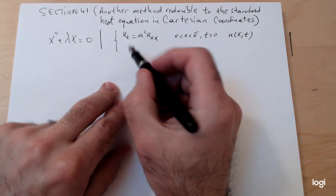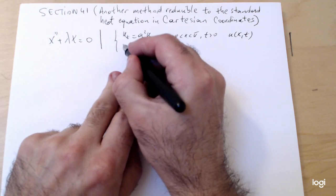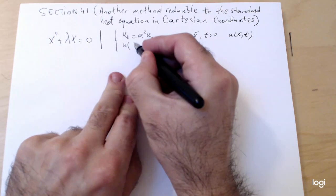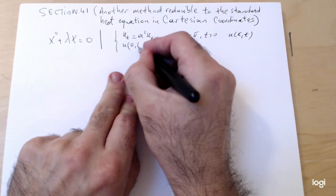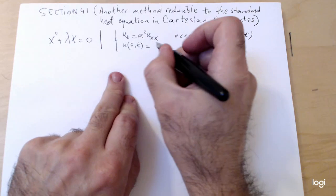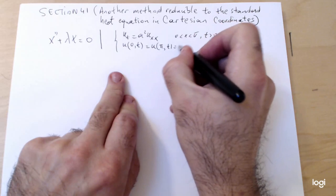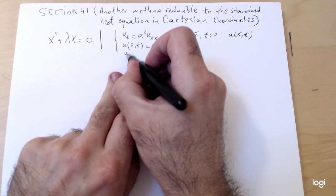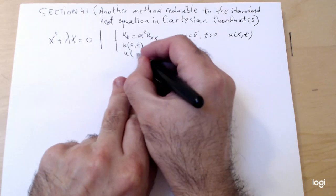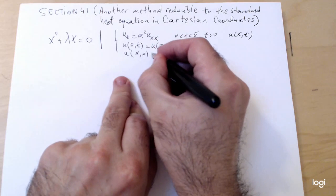Remember that u, the temperature, depends on the location on the bar and the time, so u of x,t. Suppose you have homogeneous boundary conditions of the Dirichlet type, so prescribed temperatures equal to zero at endpoints: u(0,t) = u(π,t) = 0.